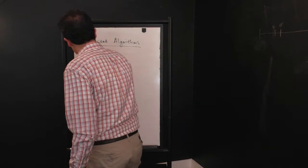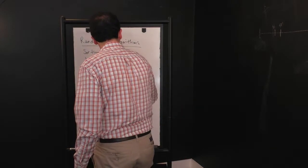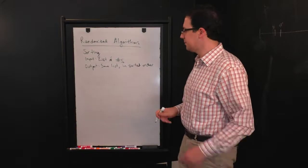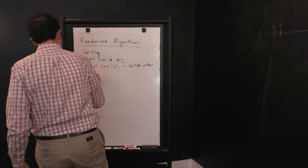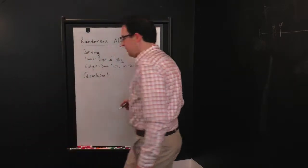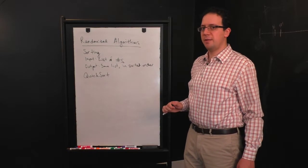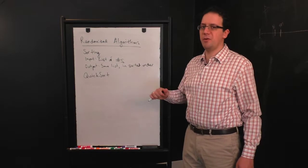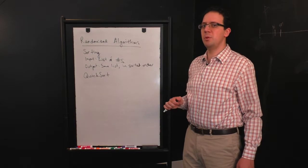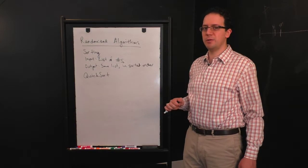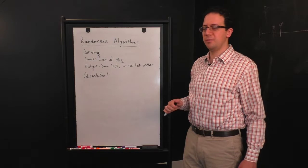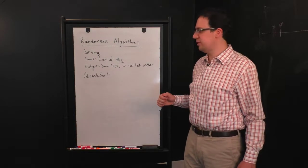of numbers. And the goal is to output the same list in sorted order. And the randomized algorithm I'm going to show you is called Quicksort. And this algorithm is so simple and it performs so well that some variant of this algorithm is what's used in most modern programming languages if you call the sort function.